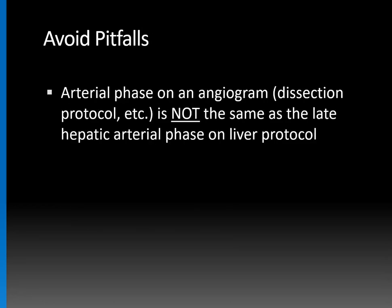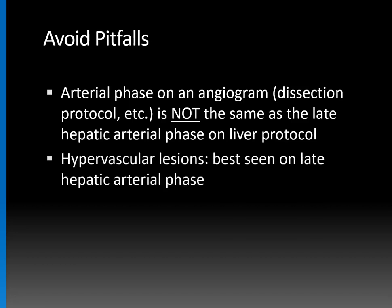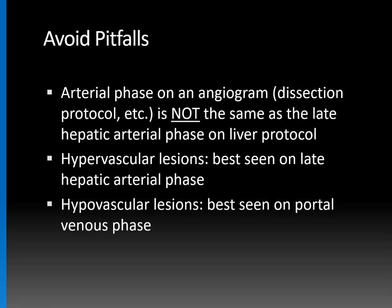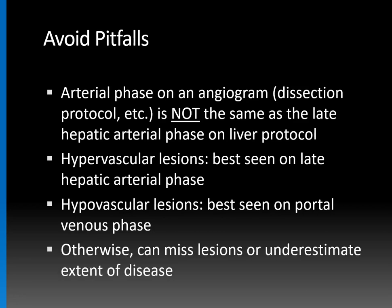To summarize the pitfalls: the arterial phase on a CT angiogram — like a dissection protocol or AAA evaluation — is not the same as the late hepatic arterial phase on a liver protocol. Hypervascular lesions are best seen on the late hepatic arterial phase, and hypovascular or hypoenhancing lesions are best seen on portal venous phase imaging. Understanding this distinction is essential, otherwise you can miss lesions, underestimate the extent of disease, or misinterpret changes between examinations.